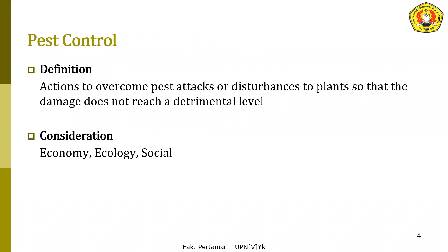We will start from the definition: what is pest control? Pest control is actions taken to overcome pest attack or disturbance to our plants so that the damage does not reach the detrimental level. To do pest control we have to consider economy, ecology, and social factors. We have a target to make sure that pest attack does not reach the terminal level.